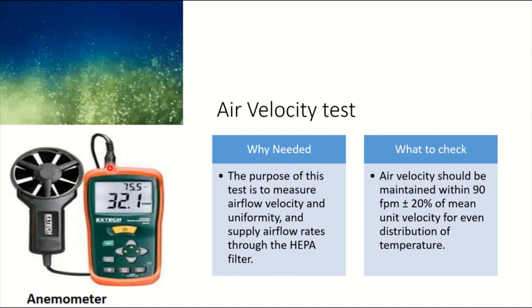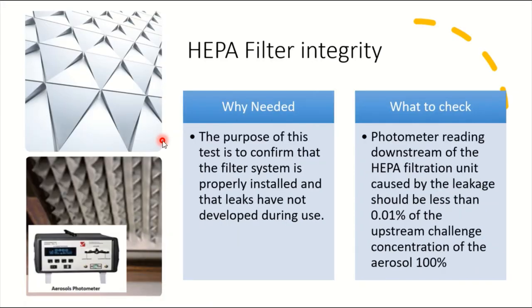Our first study is air velocity test. This is very familiar equipment—we have seen this machine in HVAC system validations. This is an anemometer. The purpose of this test is to measure the air velocity. We have a HEPA and we are expecting certain velocity. The limit is, as usual, 90 feet per minute plus or minus 20%.